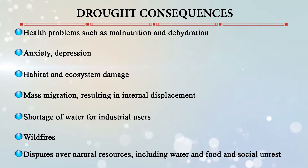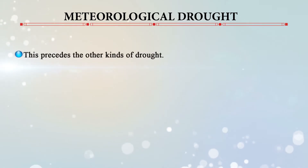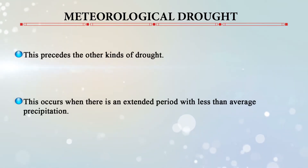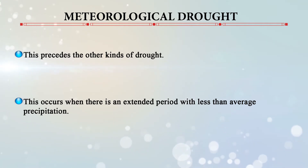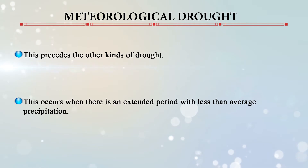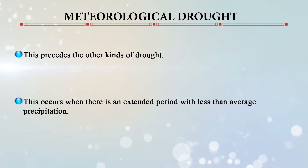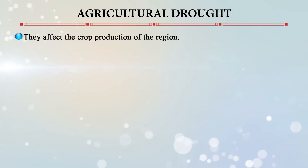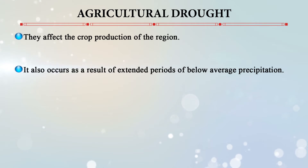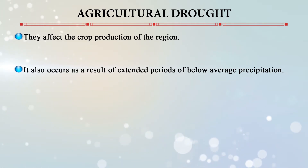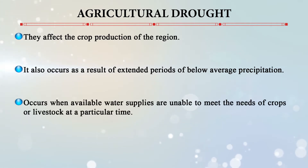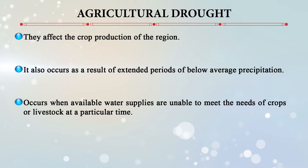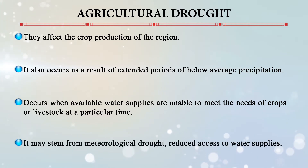Droughts undergo three critical stages before their ultimate manifestation. The first is meteorological drought, which precedes the other types. It occurs when there is an extended period with less than average precipitation and relates to meteorological phenomena and weather patterns. The second is agricultural drought, which affects crop production and occurs when available water supplies are unable to meet the needs of crops or livestock — it may stem from meteorological drought.